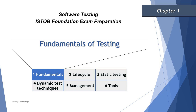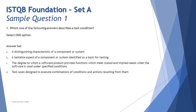Picking up the very first question of Chapter 1: which one of the following answers describes a test condition? The most important thing is when you look at a question in the examination, start thinking about what you know about it before you look at the options. A lot of us get driven by the options. At the foundation level, it's crucial to recall what you know about the term they are asking. These are K1 level questions and you don't need to be driven by options.